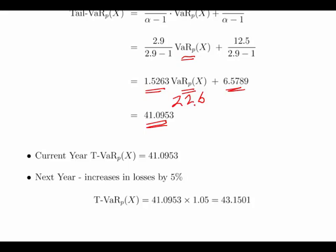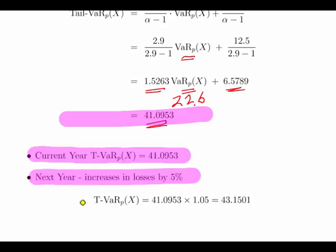There's a little twist in the question. This is the current year, but what we're asked for is next year's value. Essentially, just multiply that by 5 percent and we should get an answer close to 43.1501.